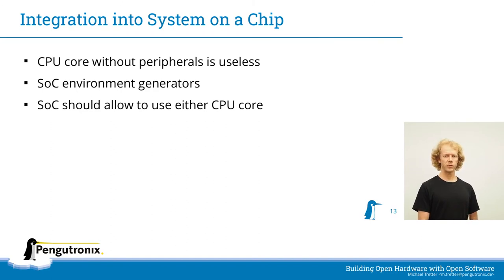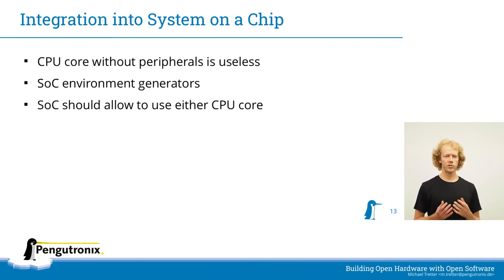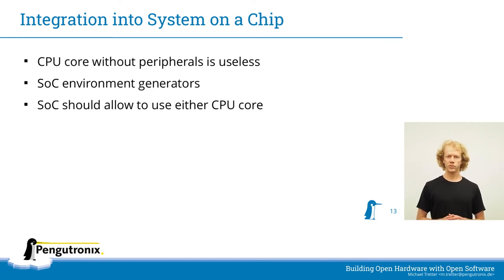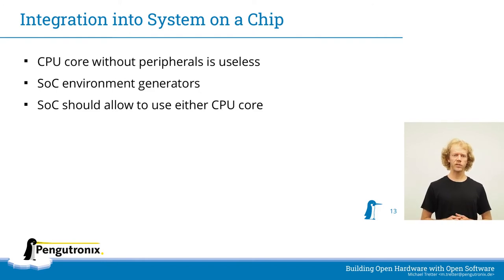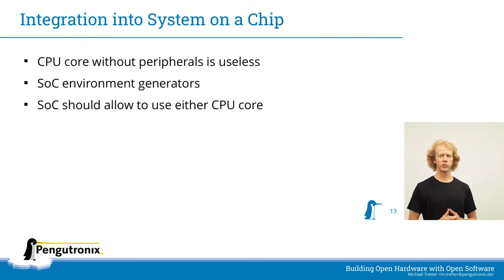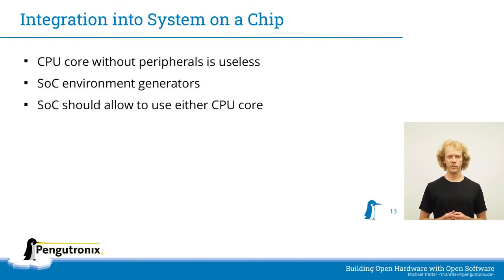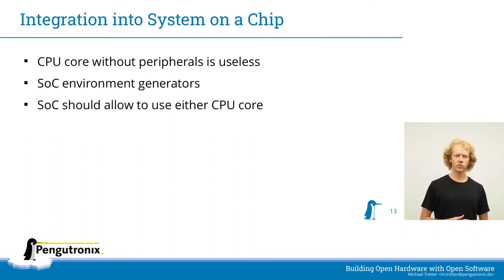We now have two different CPU implementations, which are nice for simulation, but in order to use them on actual hardware we also need peripherals to interact with the outside world. Therefore, we need to integrate them into a system on a chip suited for our test hardware. Both chips come with their respective SoC environments for evaluating and simulating a more complete system, but neither directly supports the ECP5. Furthermore, we want to evaluate different cores in similar environments and understand the effects, so using different code generators and SoCs does not look constructive.